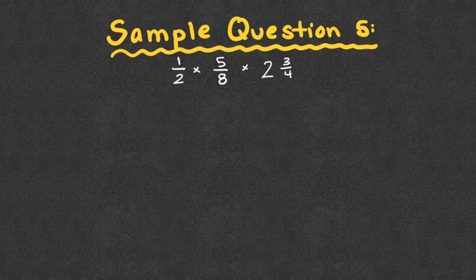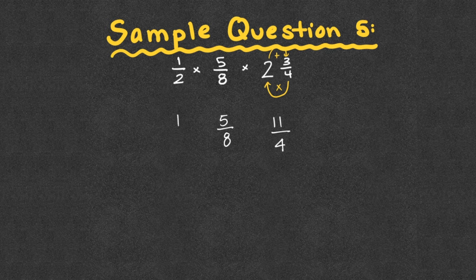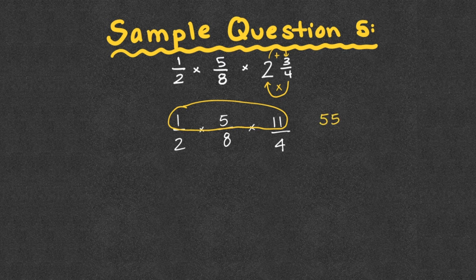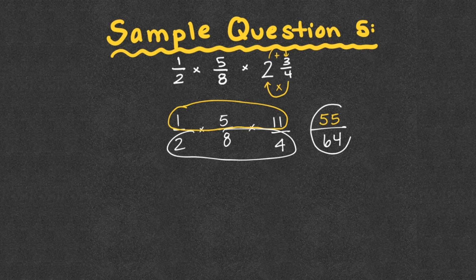Sample question five: one-half times five-eighths times two and three-fourths. First, convert the mixed number: four times two is eight, plus three is 11 — eleven-fourths. Now I check for cross-simplification across all three fractions. Can two simplify with one, five, or eleven? No. Can eight simplify with one, five, or eleven? No. Can four simplify with one, five, or eleven? No. So multiply across: one times five times eleven is 55, and two times eight times four is 64. Final answer: fifty-five sixty-fourths.